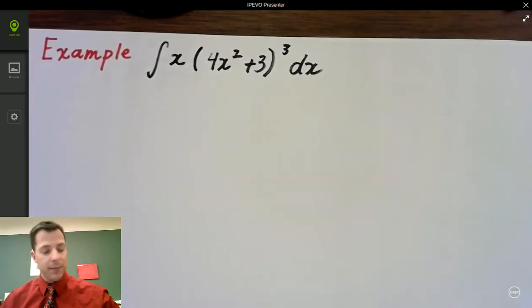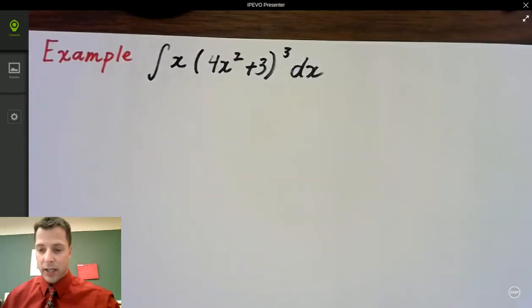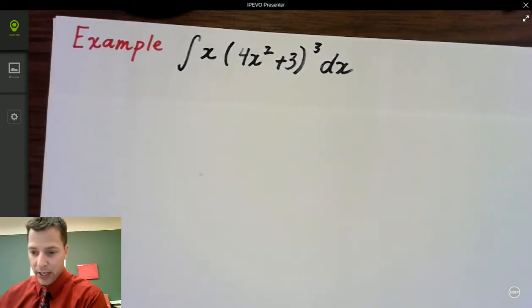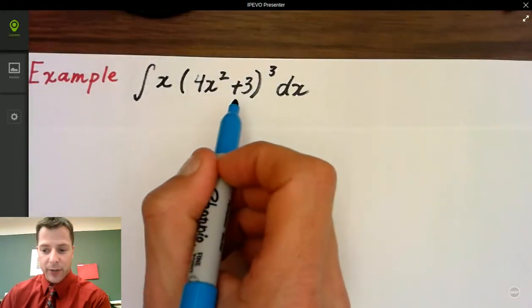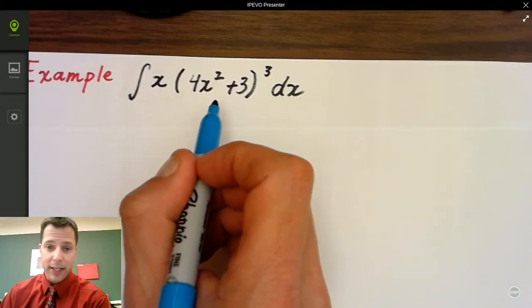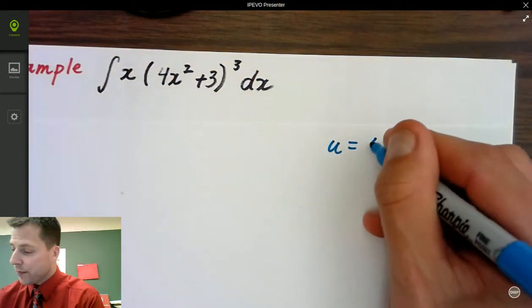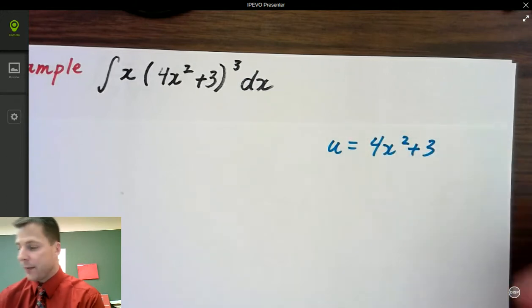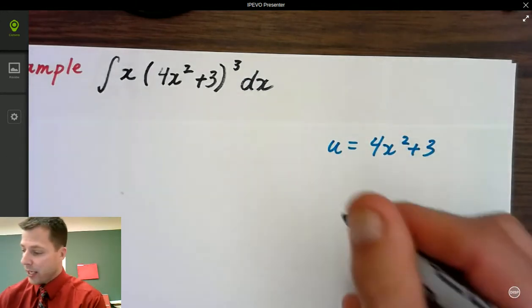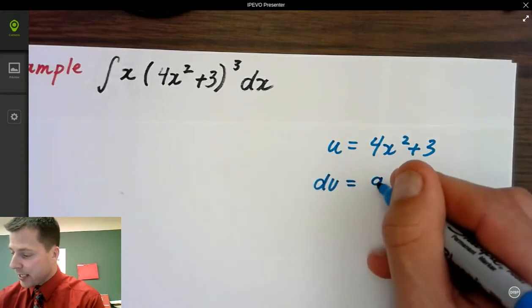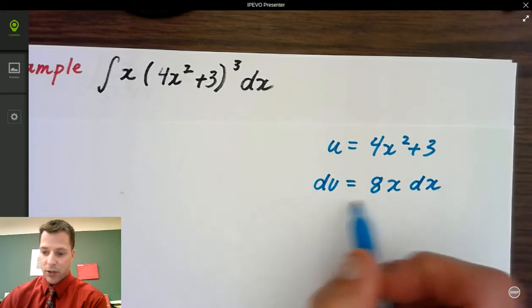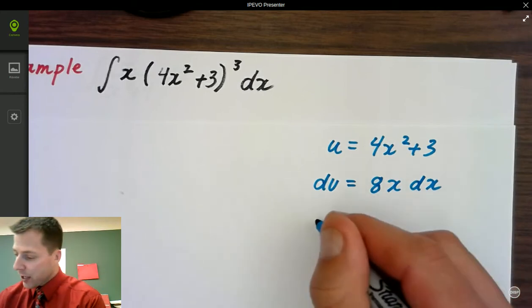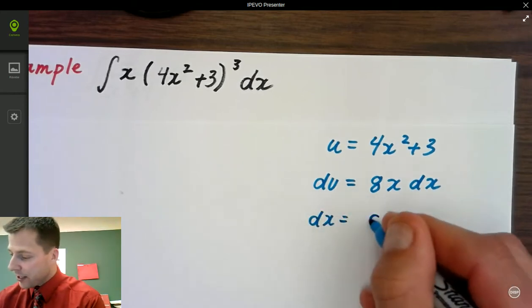All right, so here's our second example we're going to be integrating. We have x times the quantity 4x squared plus 3, and that's going to be cubed. Now, one way I look at this, how to pick out what I'm going to use, I always look at the polynomial and here's a polynomial inside. This has a larger power, so I'm actually going to pick that for my u. So I'm going to have u equals 4x squared plus 3. That means when I integrate this, I have du equals 8x dx. Now, remember, I told you I solved for dx. It's always du over dx, and I just multiply each side, so I skipped a step there. I know that dx now is du over 8x.